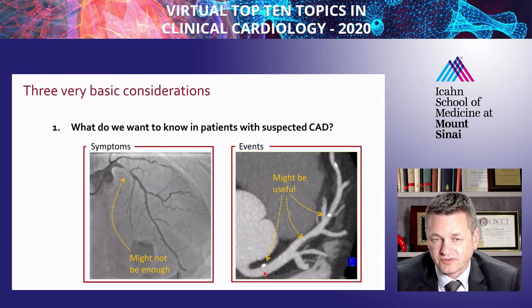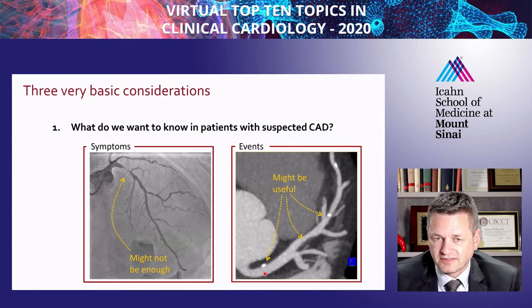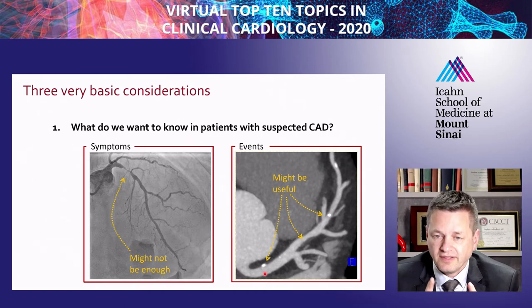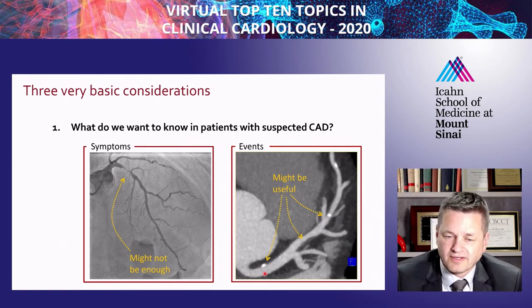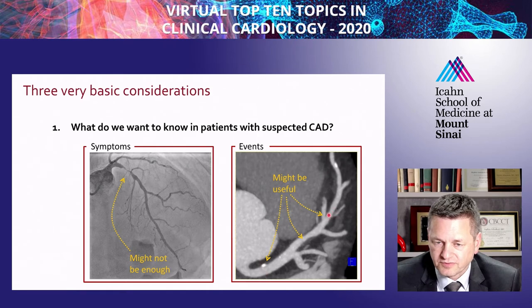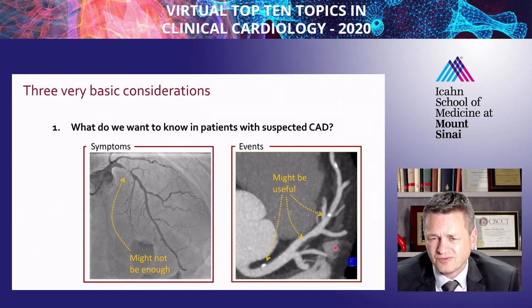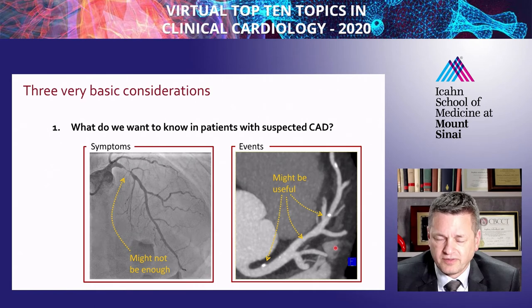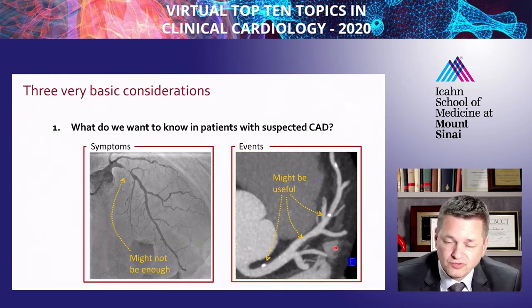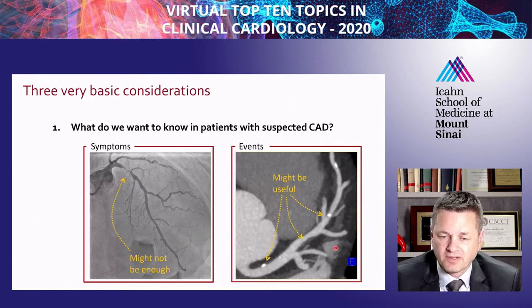Because acute coronary syndromes are caused by the rupture of atherosclerotic plaque, it might be useful to visualize these plaques. This is where CT comes in for the first time, because CT angiography allows, if image quality is sufficient, to visualize both calcified plaques and non-calcified plaques. If image quality is really good, we can quantify and to some extent also characterize coronary atherosclerotic lesions. Since acute coronary syndromes are caused by plaque rupture, it might be useful to detect or rule out coronary atherosclerotic plaque by cardiac CT.